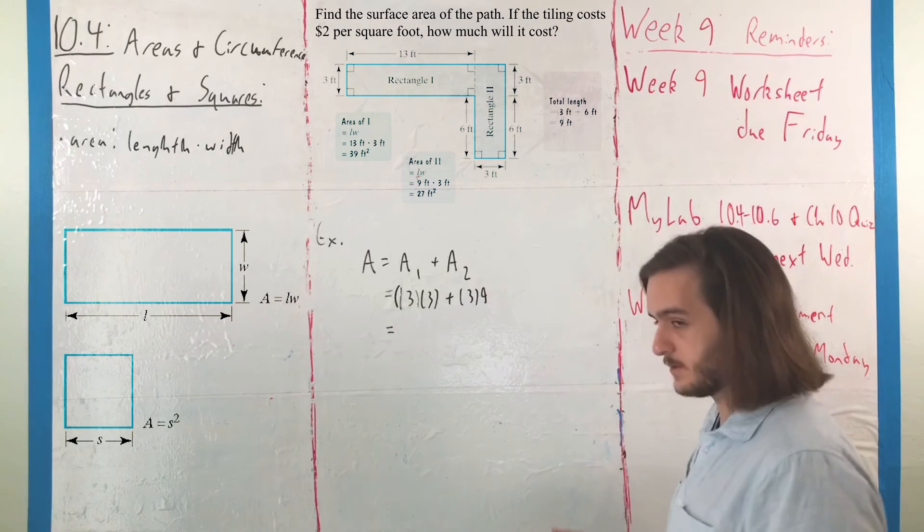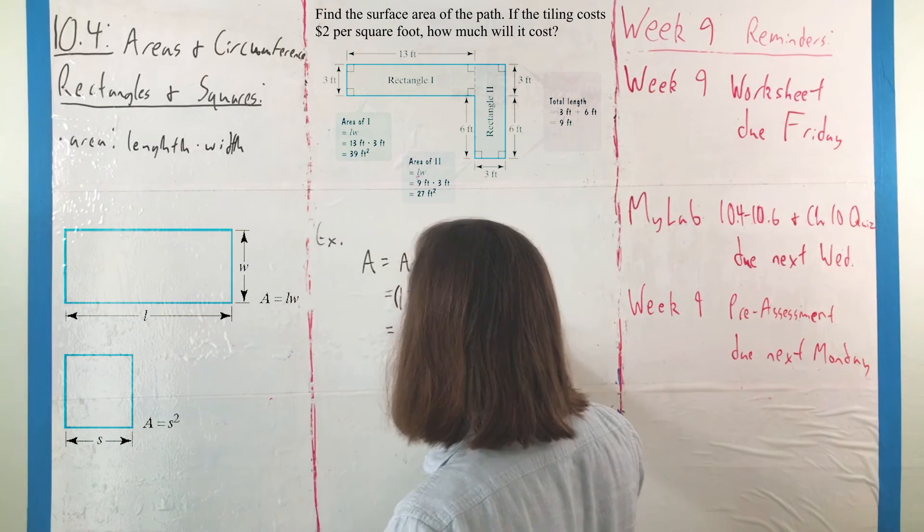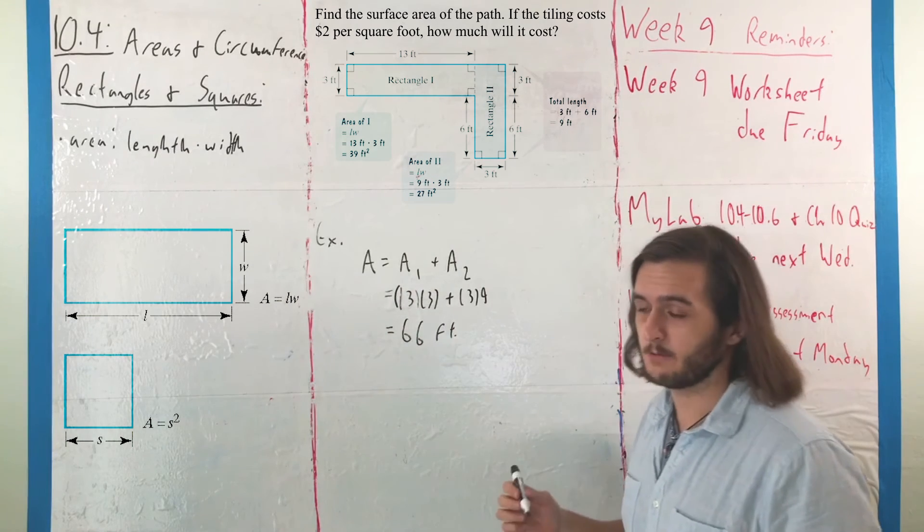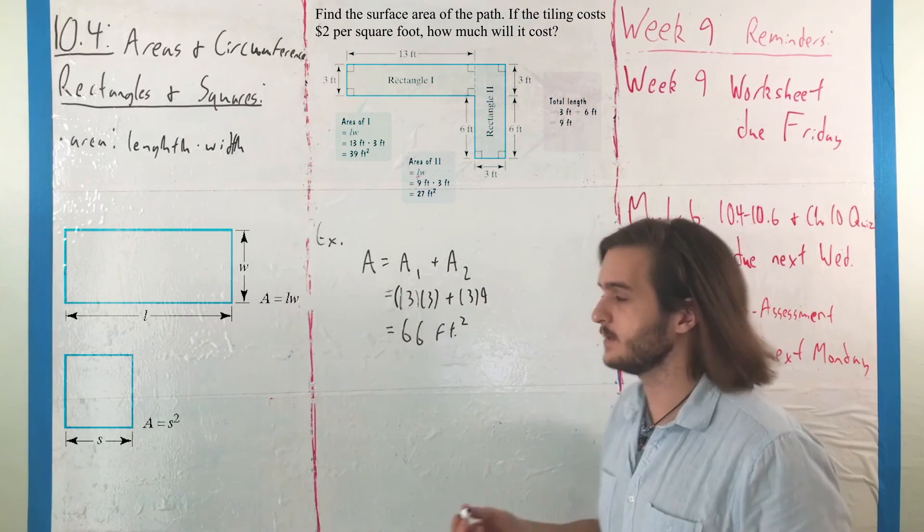For a total, once you multiply that out and add it up, of 66 feet. Now that we have—excuse me, shouldn't just be 66 feet, that's 66 square feet.